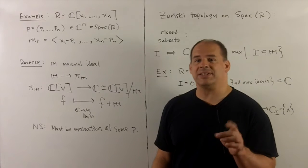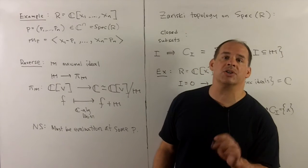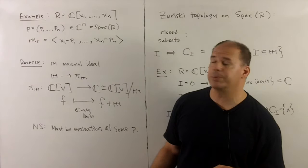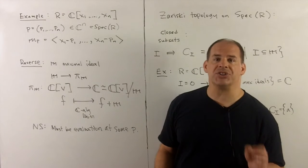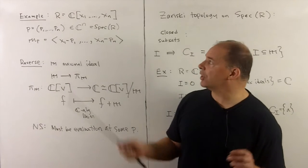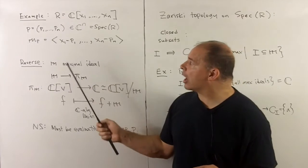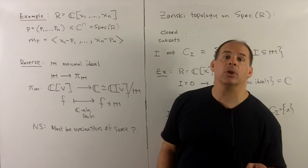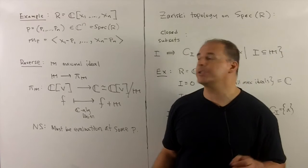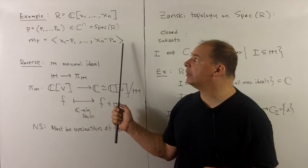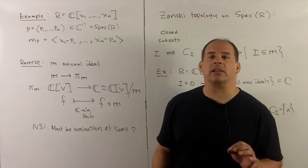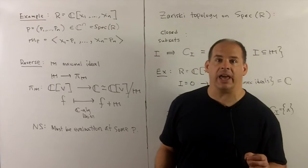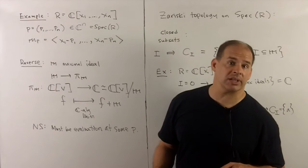Of course, the example we want to understand is when R is a polynomial ring in N variables. Then Spec of R is just C to the N. So maximal ideals in R are just going to be given in the form X1 minus P1 up through XN minus PN, where the P's are complex numbers, and we just generate the ideal. So there we see directly the correspondence between maximal ideals and points in C^N. And so that's Spec R in this case.